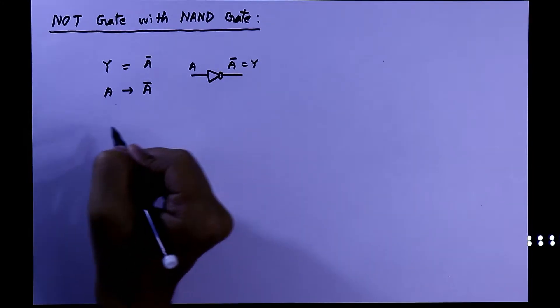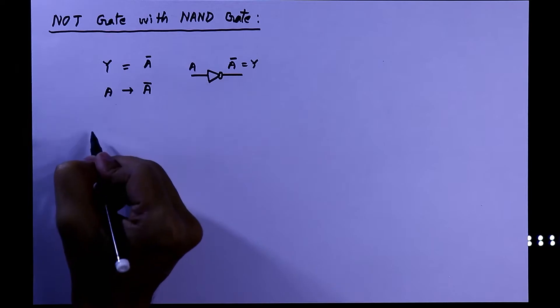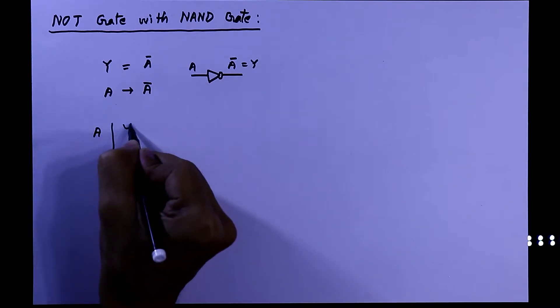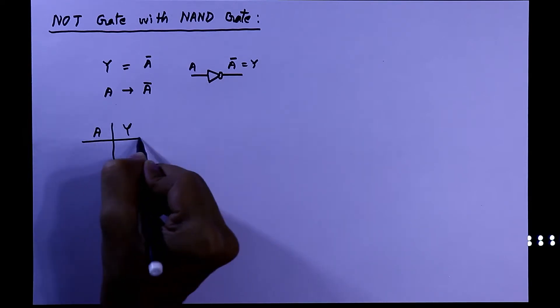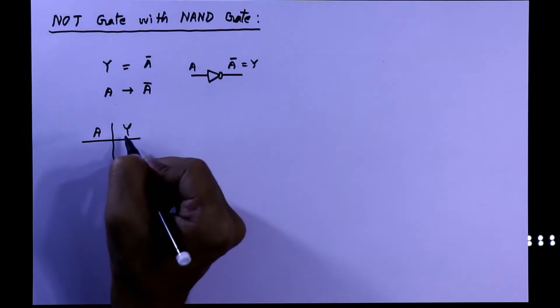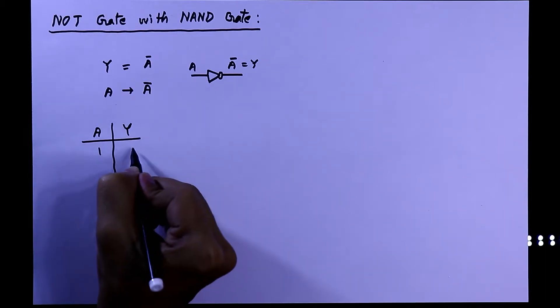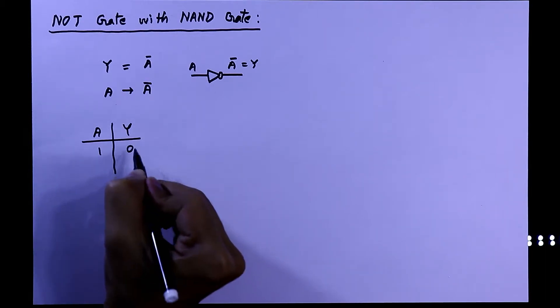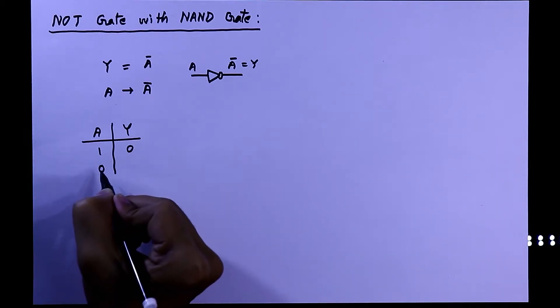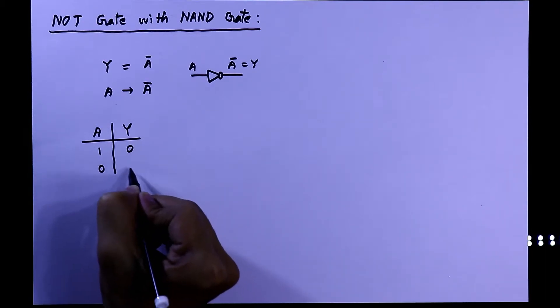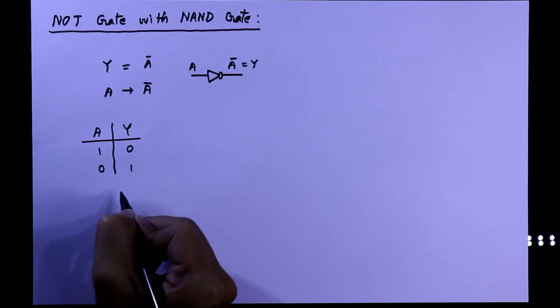This is the truth table of NOT gate. A is the input and y is the output. The truth table is: if a is 1, y will be 0, and if a is 0, y will be 1.